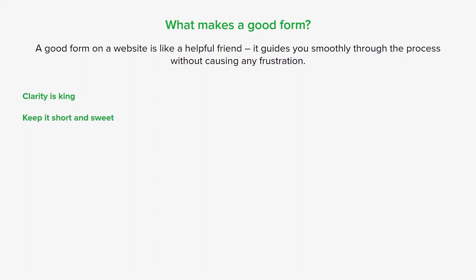Keep the form as short and sweet as possible. Only ask for information that you absolutely need — more fields means more work for the user and potentially leads to abandonment. You can also use something called conditional logic, where you show or hide fields based on previous answers. This keeps the form more relevant and reduces unnecessary steps.